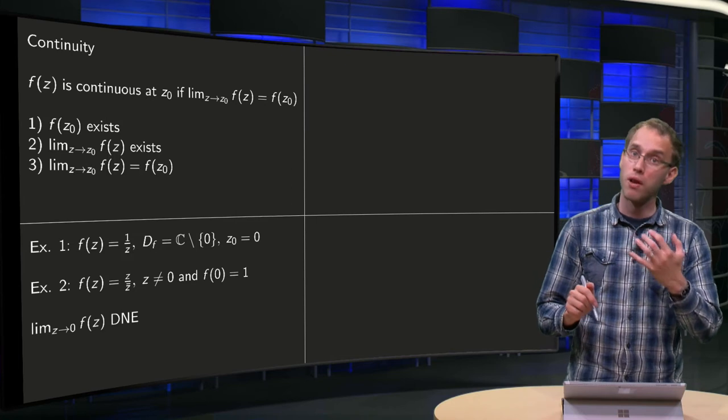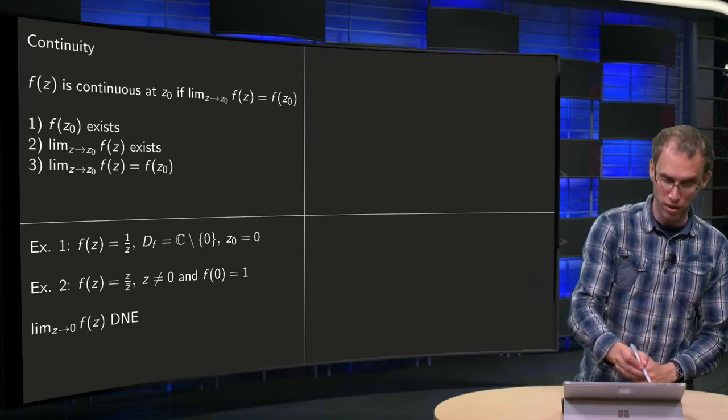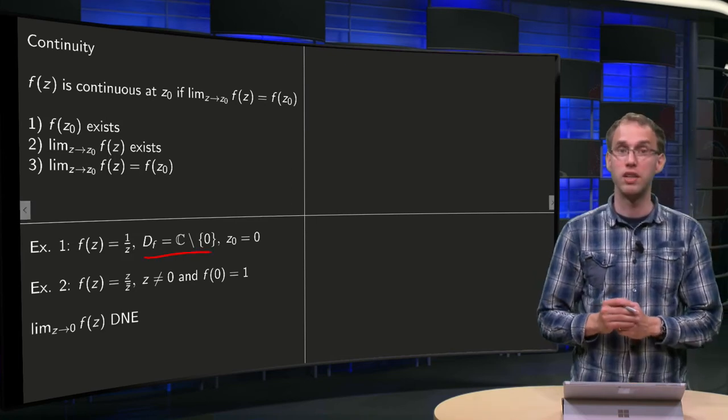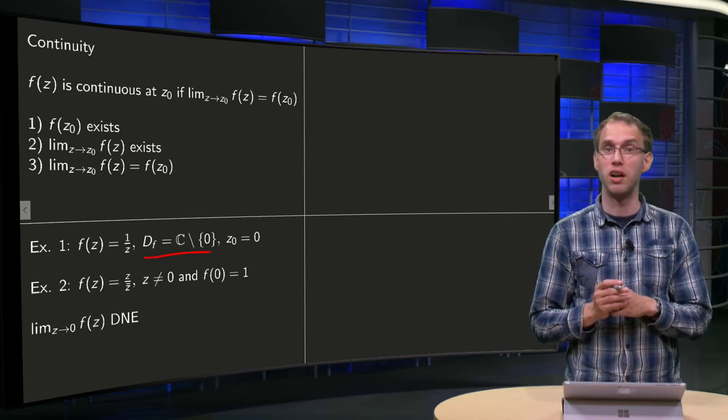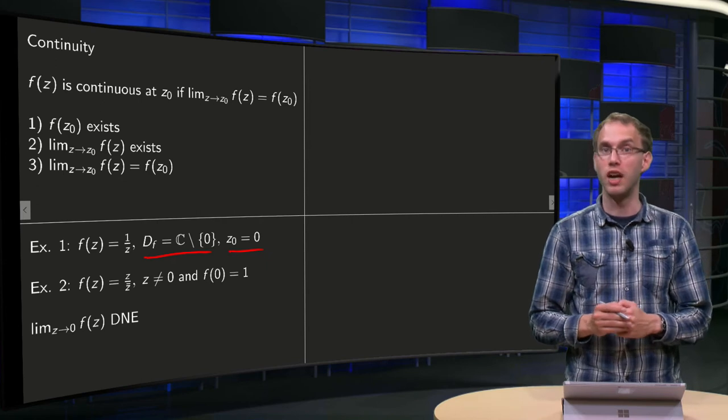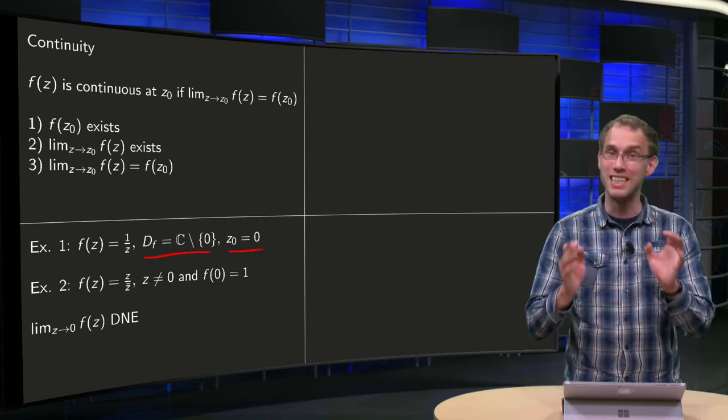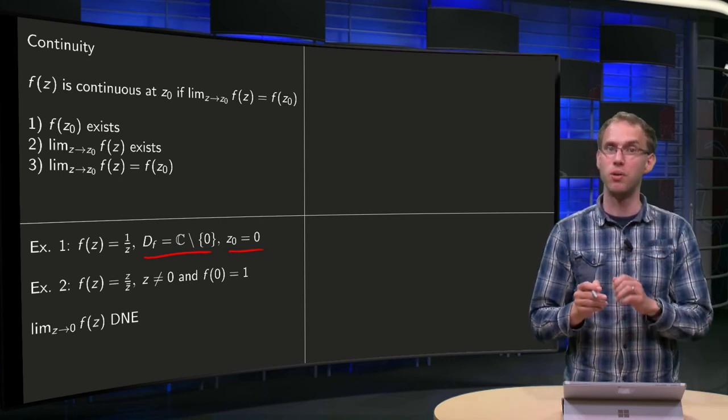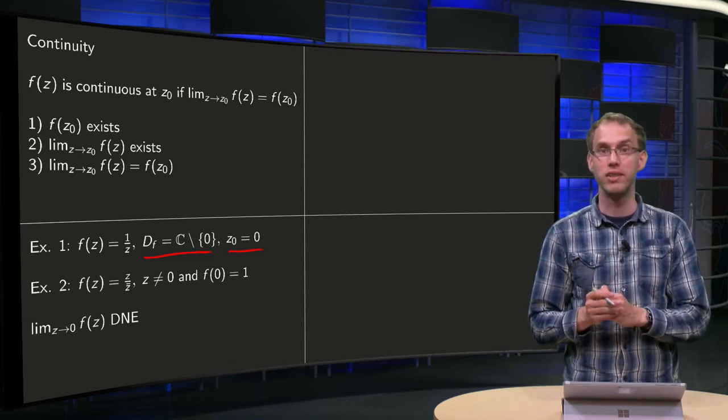Let's do a few examples. First, we have f(z) = 1/z, the domain of z is C, with the exception of 0. What about continuity? Let's set z₀ = 0. It's not continuous there because f(z) doesn't even exist there in this definition, so this function is not continuous at 0.